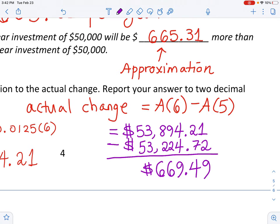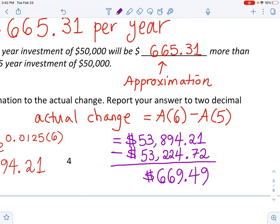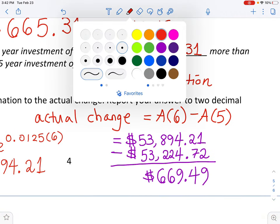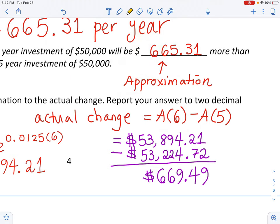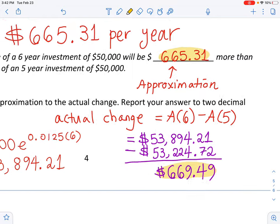What did you guys get? I got $669.49. Look how close this number is. So this is the actual change. And what we got using the derivative function is the approximation. I'm gonna highlight them both because they are so close. Look, this number right there, the approximation and the actual change were just like what? $4 different, right? So that was very good.